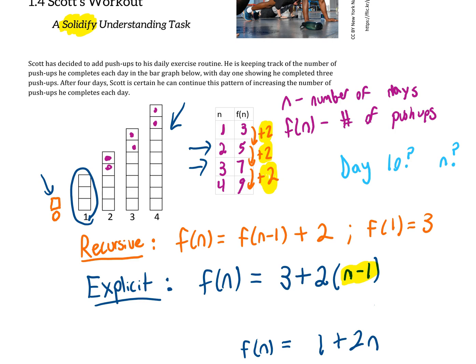The number of times we've added two is one less than the number that we're looking for. On the fourth day we have to do four minus one and add two three times. A faster way of representing adding two three times is to do 2 times 3, or in this case 2 times (n-1).